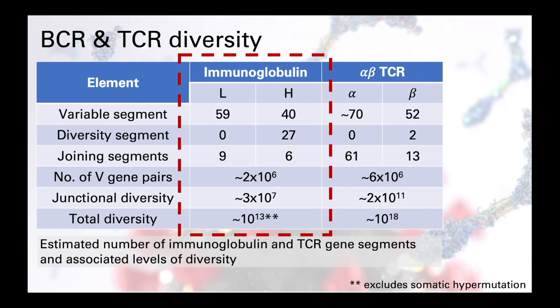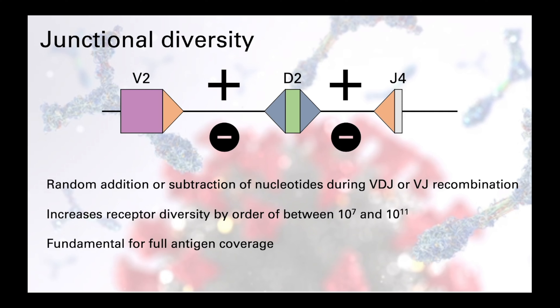Junctional diversity occurs as part of central diversification, as the T or B cell is maturing in the thymus or bone marrow respectively, and occurs particularly in complementarity determinant region 3, which is the most variable of the CDRs. Junctional diversity is the addition or subtraction of random nucleotides in the VDJ and VJ regions of BCRs and TCRs, and this produces a truly staggering range of receptors to ensure full coverage.